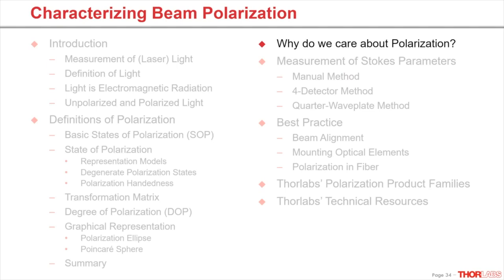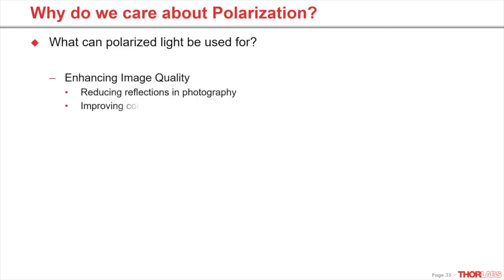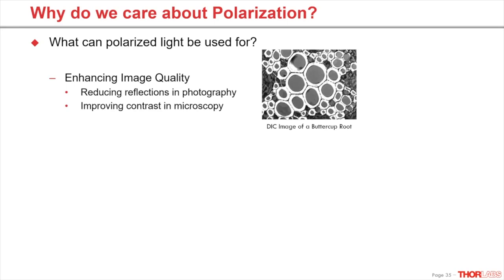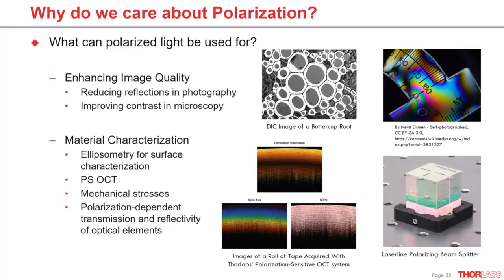Now we know how polarization can be described mathematically and represented graphically. But why is it important to know about polarization and the different polarization states? Most of us have already encountered polarization in our daily life — think of polarized sunglasses that suppress reflections from reflective surfaces. This method is used in many applications, for example in photography or microscopy to enhance the image quality. Reflections get reduced and contrast improved to emphasize structures and features. This applies also to material characterization like ellipsometry, polarization-sensitive OCT, checking for mechanical stresses, or the optical behavior of polarization-dependent transmission and reflectivity of optical elements.